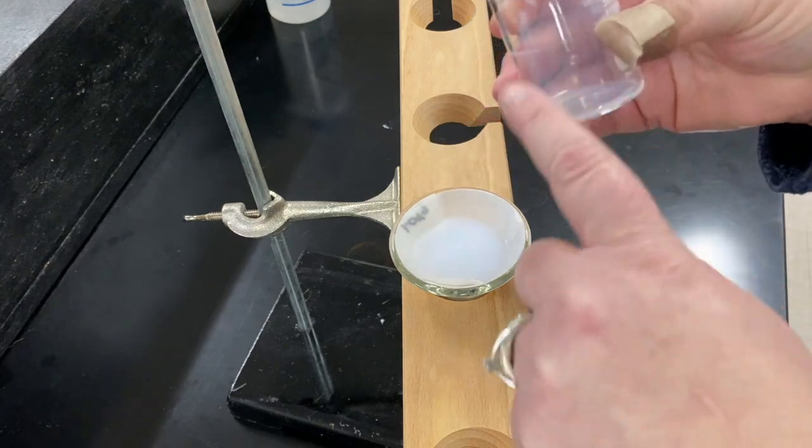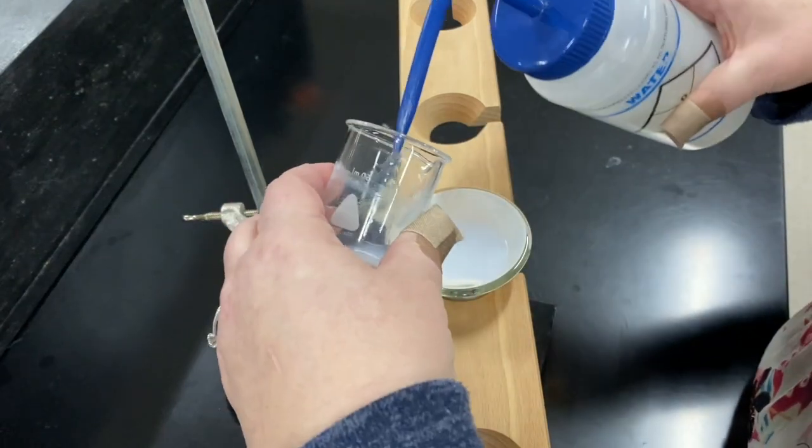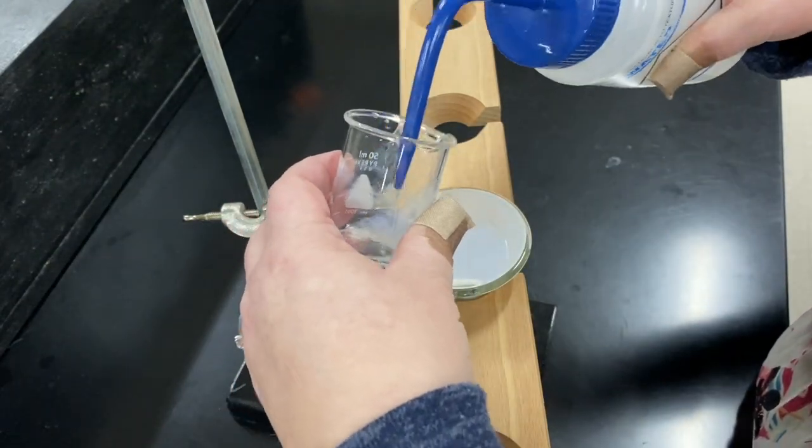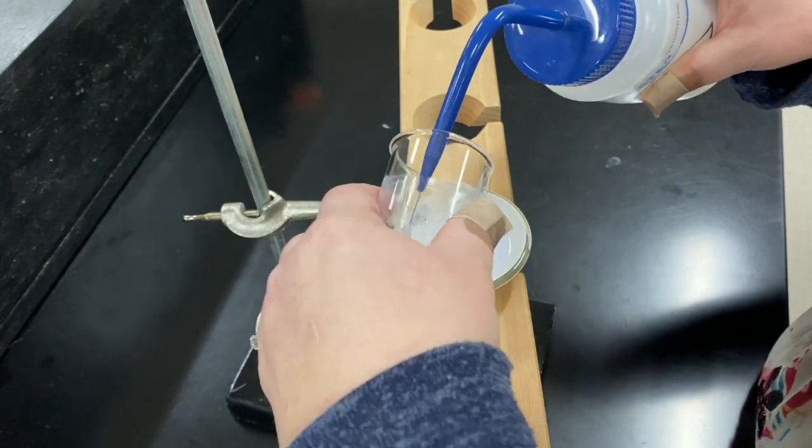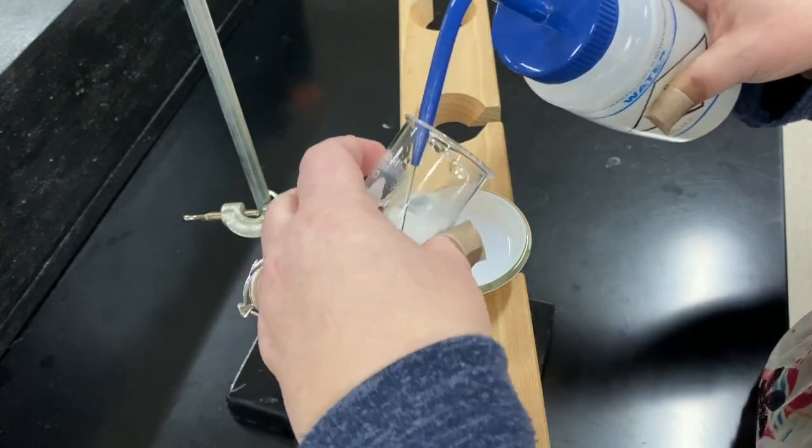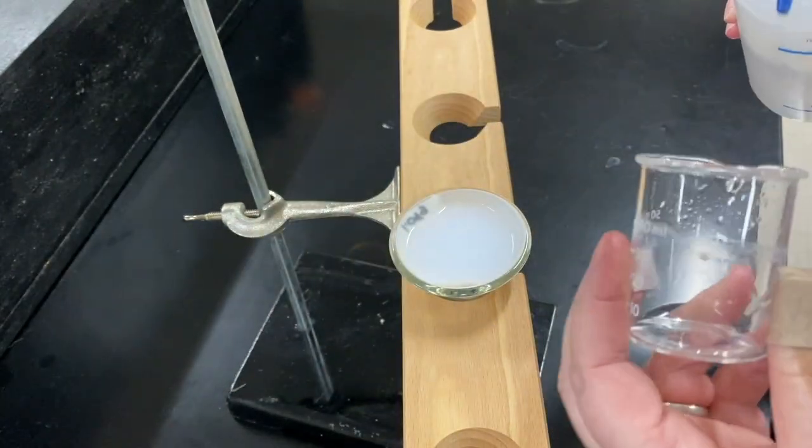You can see there's still some left into this beaker. I haven't caught everything yet, so I'm going to use a little bit of distilled water to rinse that out, but we want to catch everything. Again, not going over the top of the filter paper.